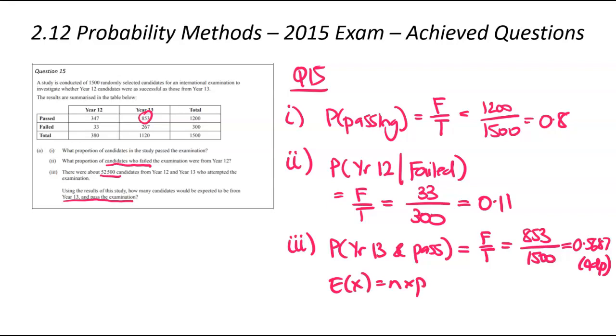I can now get into the expected value part. The expected value equals N times P. That's going to be 52,500, the number of candidates in total, multiplied by the probability of the thing we're looking for. In this case, year 13s who passed, 0.5687.